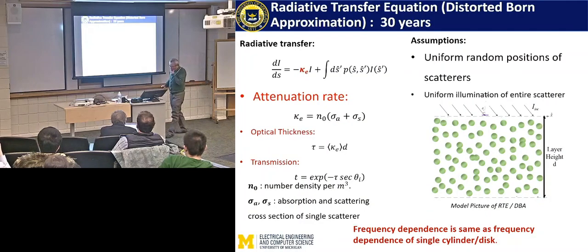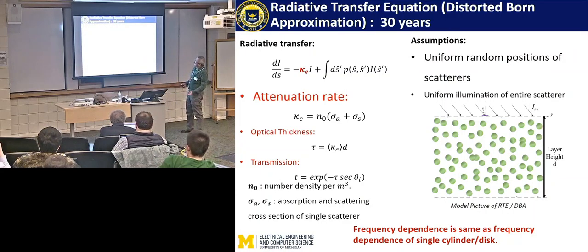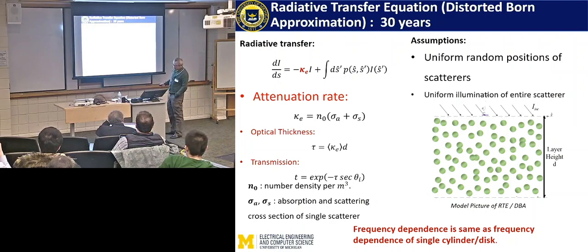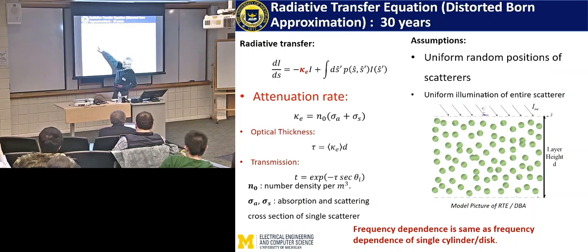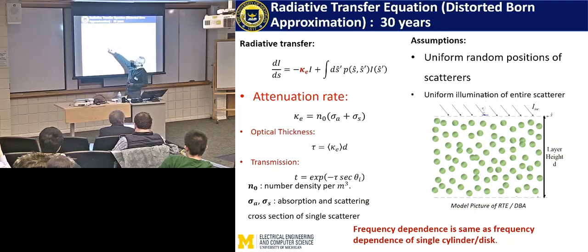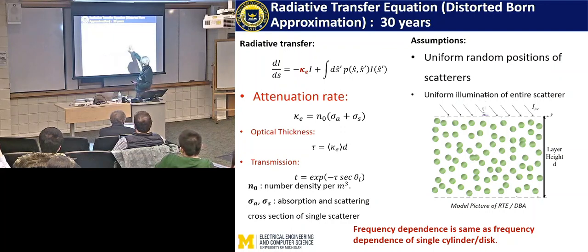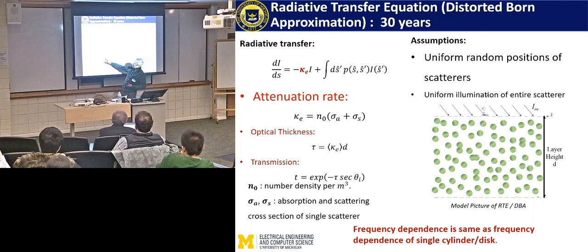We go back to this problem we have been working on for many years, at least 30 years. The basic approach has been using the radiative transfer equation. If you look at the radiative transfer equation, the important thing is that you have this kind of medium, and you assume there is an attenuation rate. You look at every particle, calculate the absorption and scattering cross-section, get the average attenuation rate, and the optical thickness is this attenuation rate times the thickness. The transmission — how much energy reaches down to the soil — is exponential minus tau.